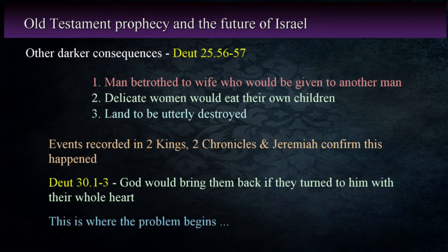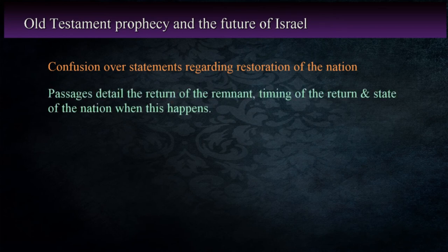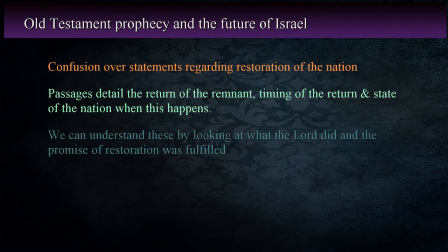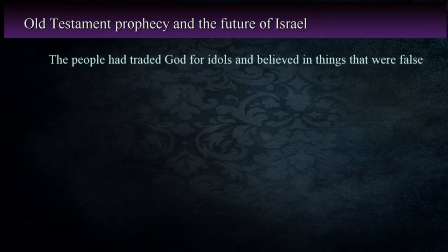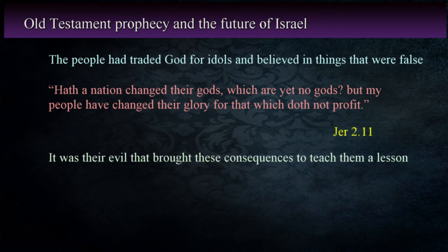And this is where the problem begins. There's a lot of confusion over the prophets' statements that seem to indicate the full restoration of the nation. There are numerous passages in the prophets that discuss the return of the remnant, the timing for the return, and the state of the nation when this happens. We can take a simpler route and look at what the Lord did and how the promise of restoration was fulfilled. Jeremiah discusses the fact that the people had traded their belief and faith in the Lord for that which was false. Jeremiah writes: 'Hath a nation changed their gods, which are yet no gods? But my people have changed their glory for that which doth not profit' — Jeremiah 2:11. Jeremiah goes on to describe the goodness of God they had thrown away and the fact that it was their evil that brought these consequences upon them.